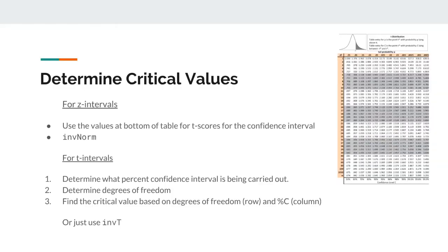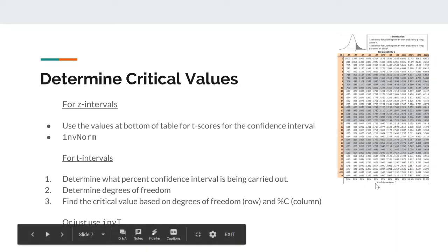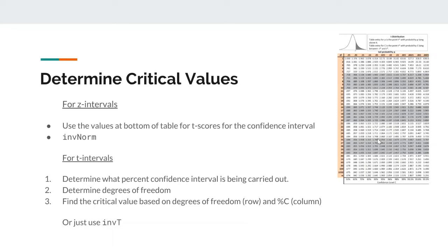For a T-interval, there's a three-step process you'd use for the green sheet. First, determine what percent confidence interval is being carried out. Step two, determine degrees of freedom, which is sample size minus 1 for a T-interval. Then you find the critical value using those two values. Say for example you have a 90% confidence interval with 25 degrees of freedom. You look at the 90% column and go up to 25. That means your critical value is going to be 1.708.